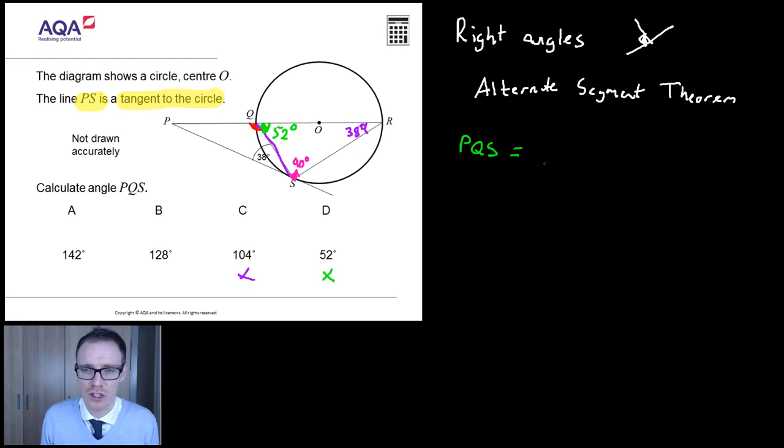Because we've got angles on a straight line. 180 degrees. Take off me 52 degrees. I'm going to take a gamble and try and do this without a calculator. I reckon that's 128 degrees, which is angle, answer, sorry, B there with that one.